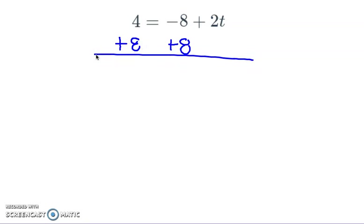So now negative 8 plus 8, that gets you 0 here. So the only thing left on the right side is 2t. And then over here, 4 plus 8 is 12.